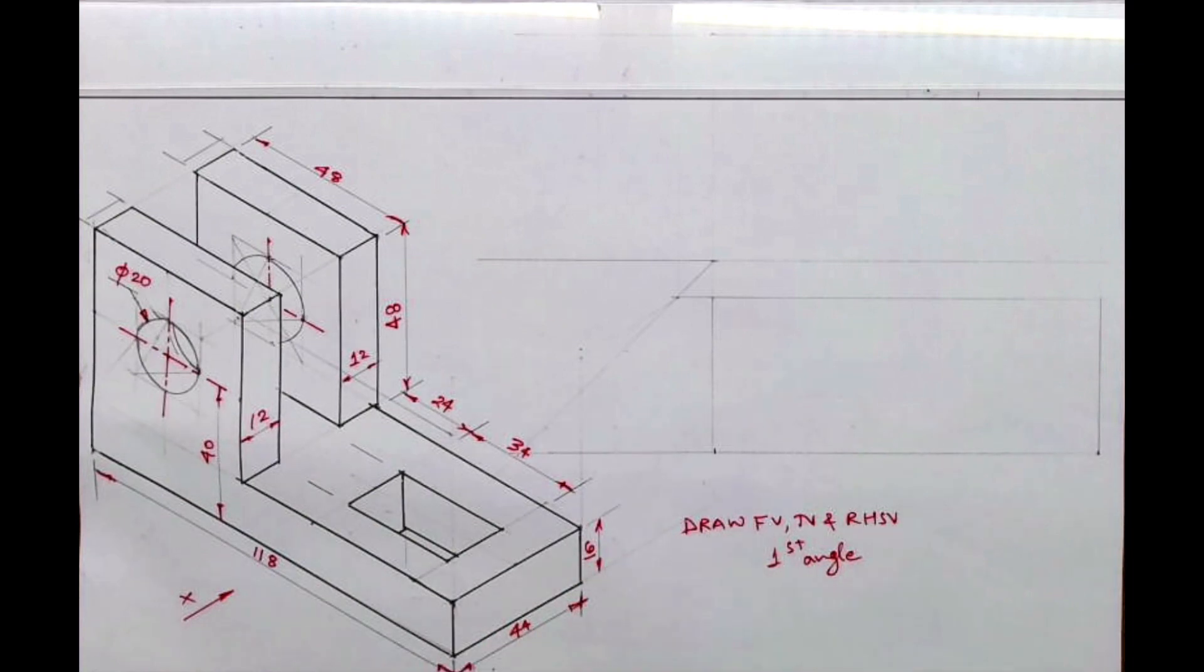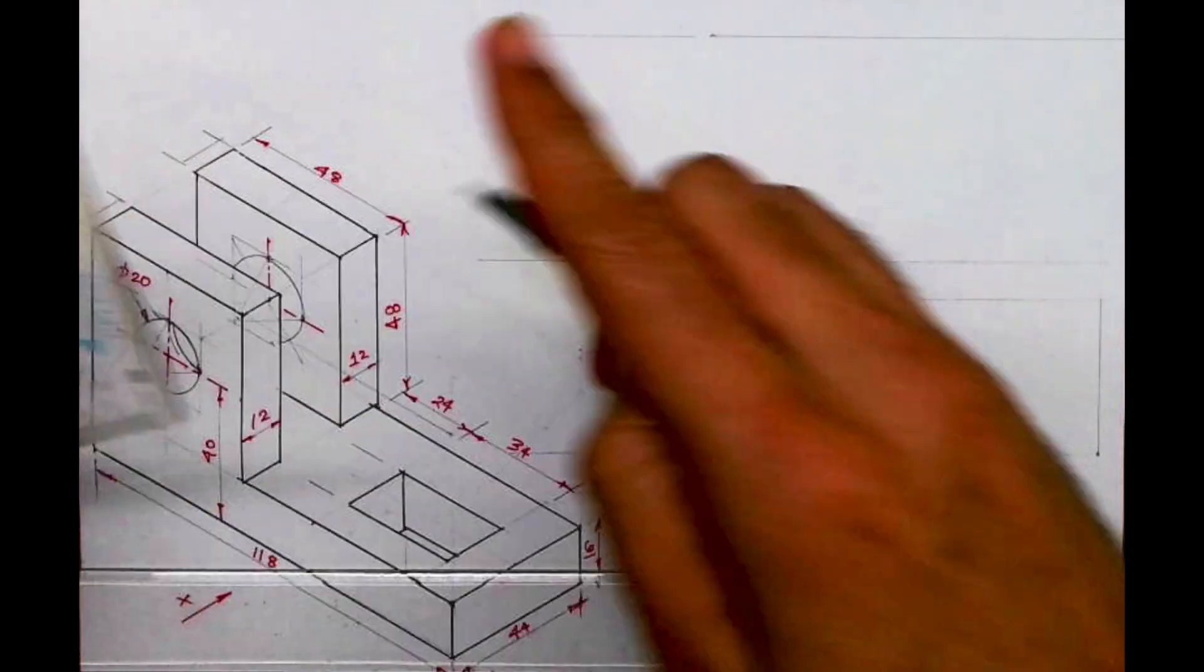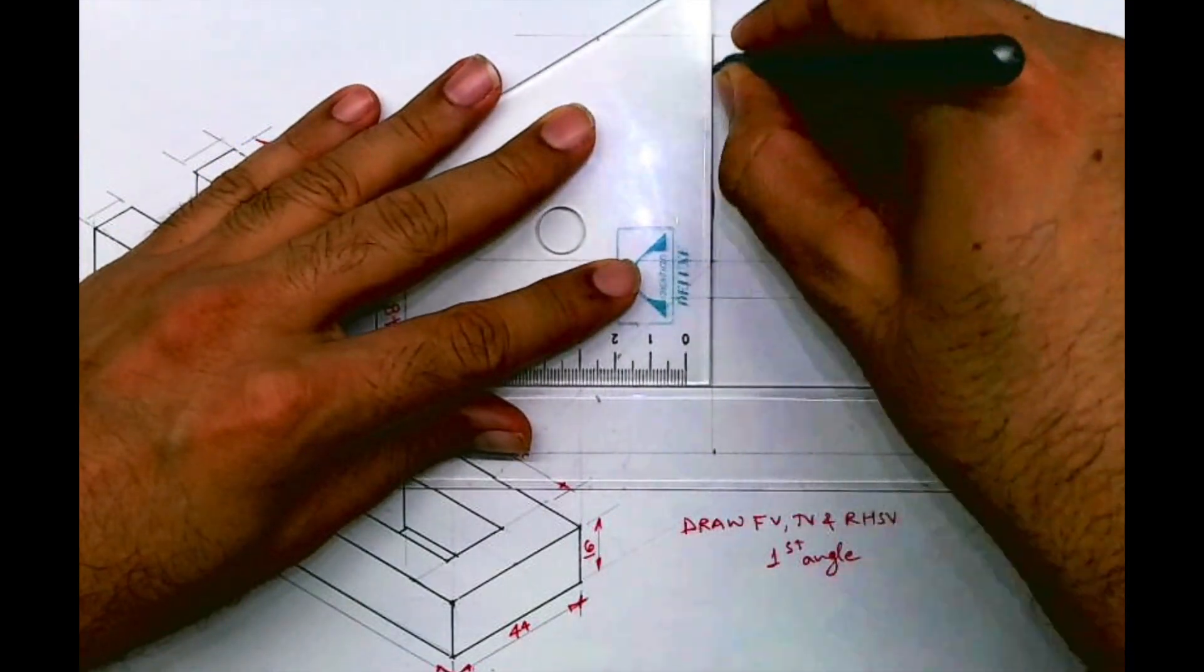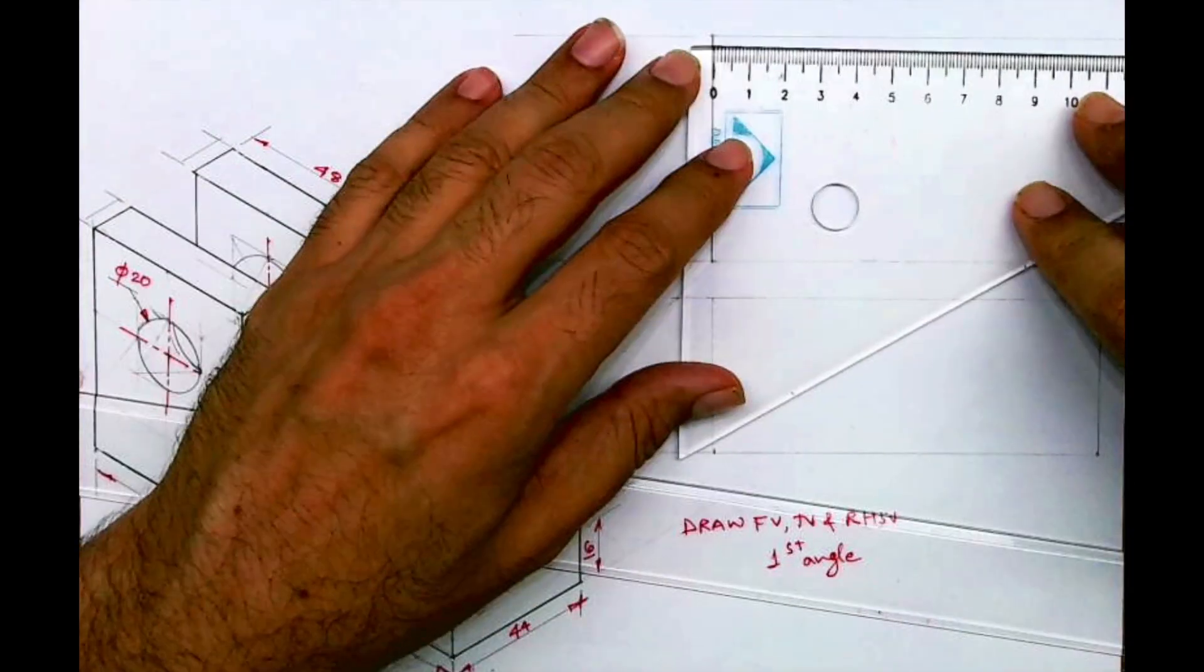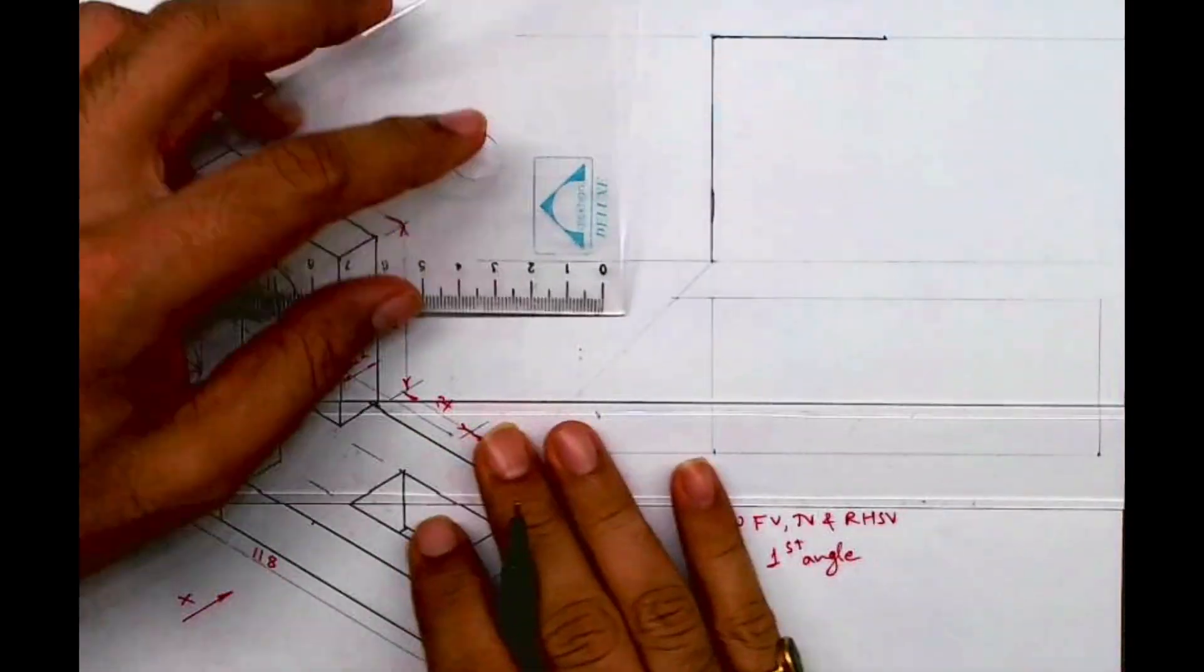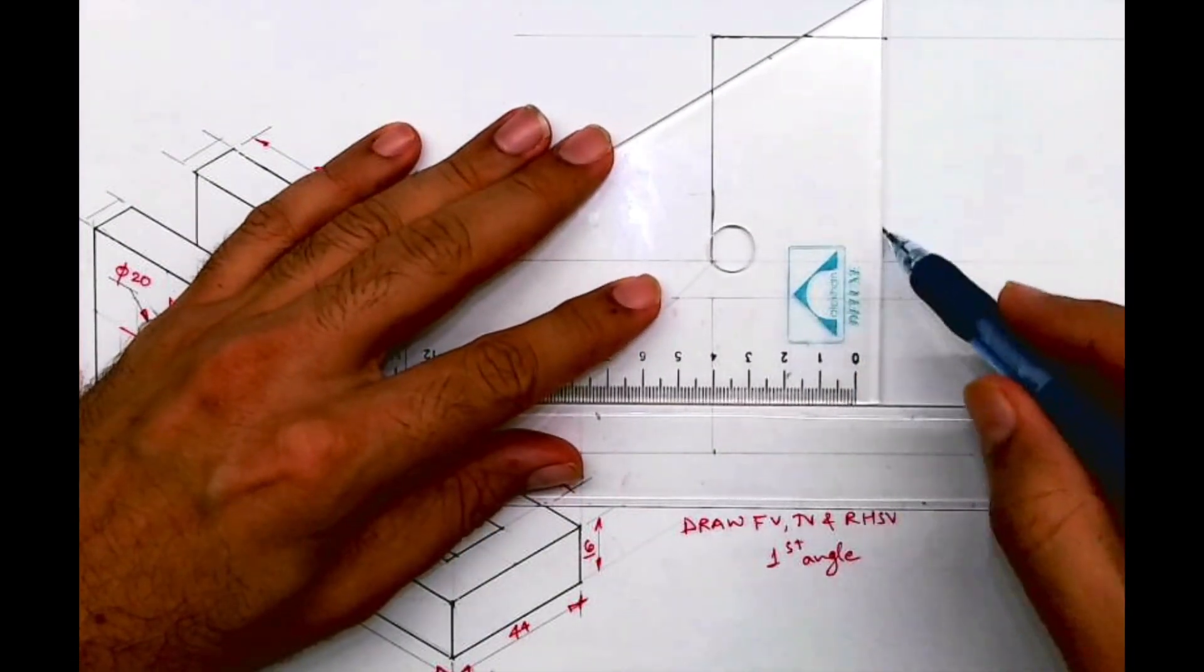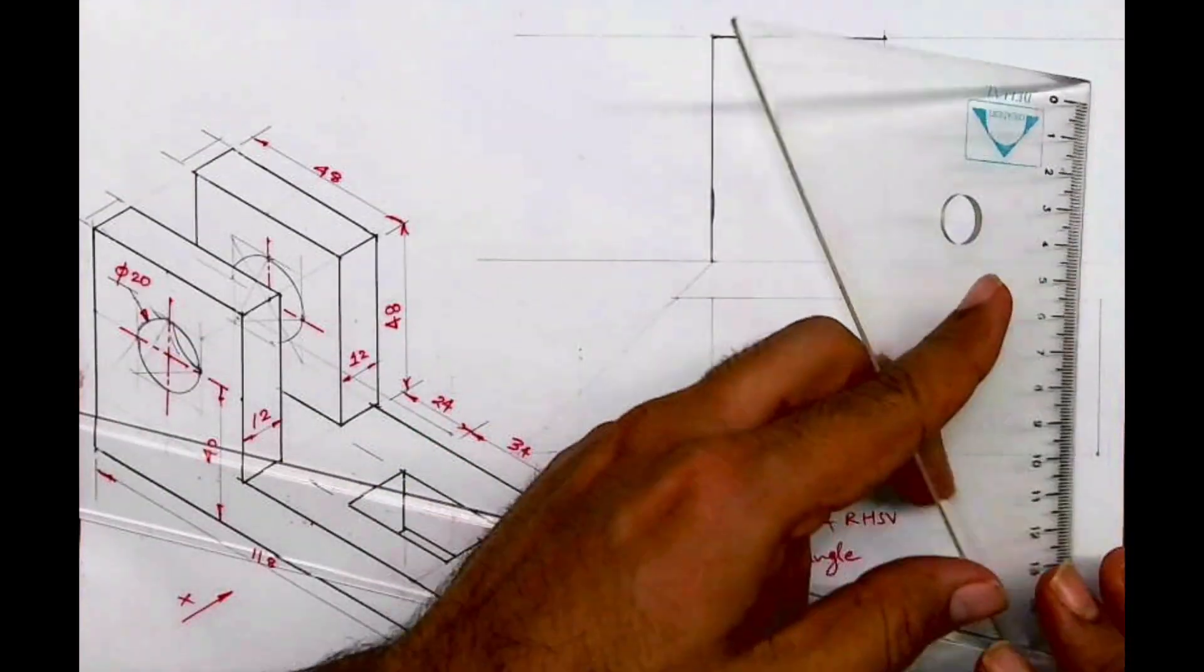See this - this entire part is straight. Then we'll draw 48. Then we'll draw height 48, and this height is 16.